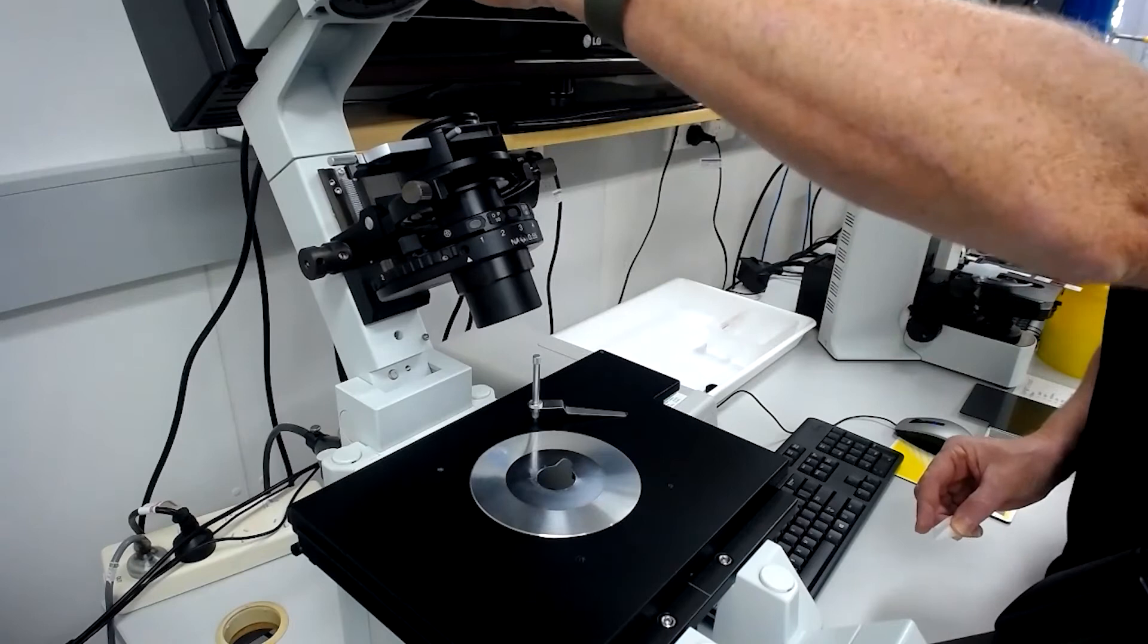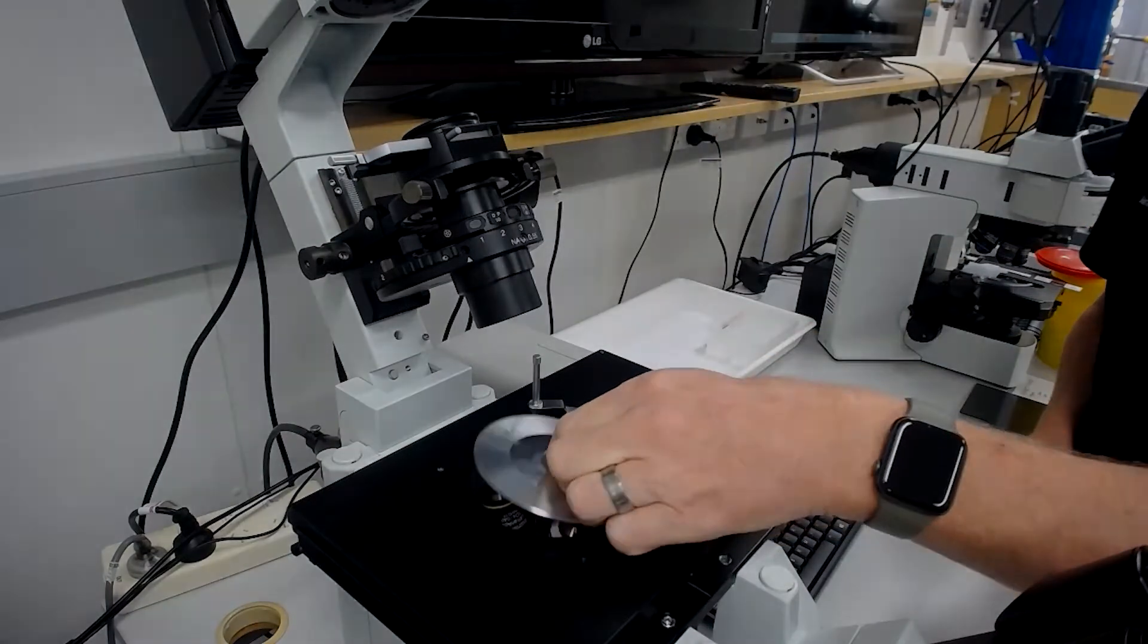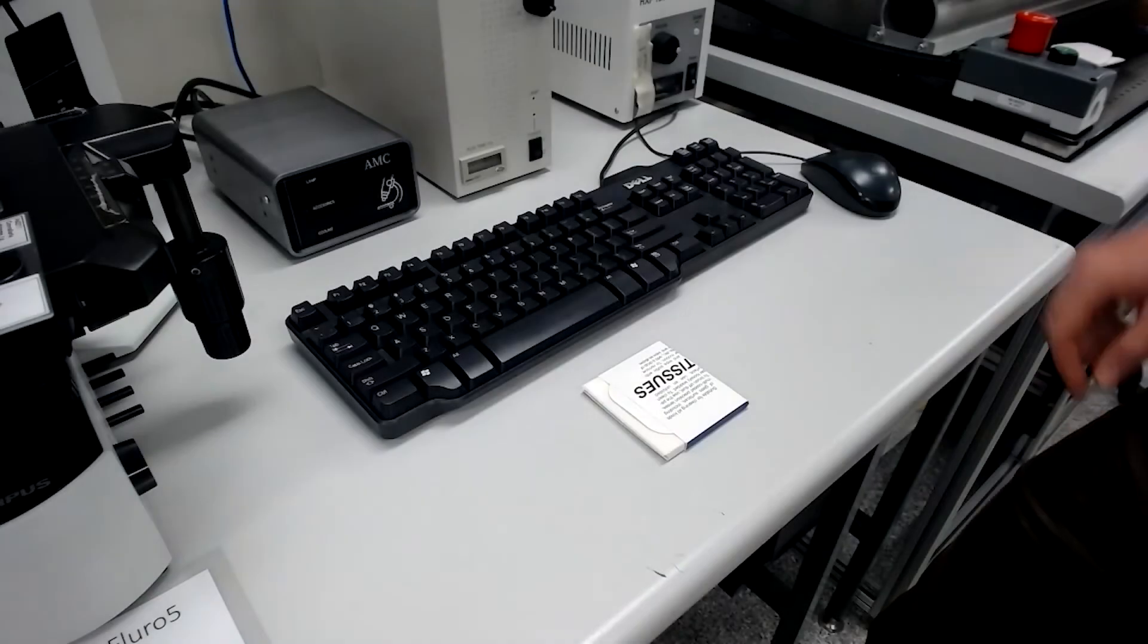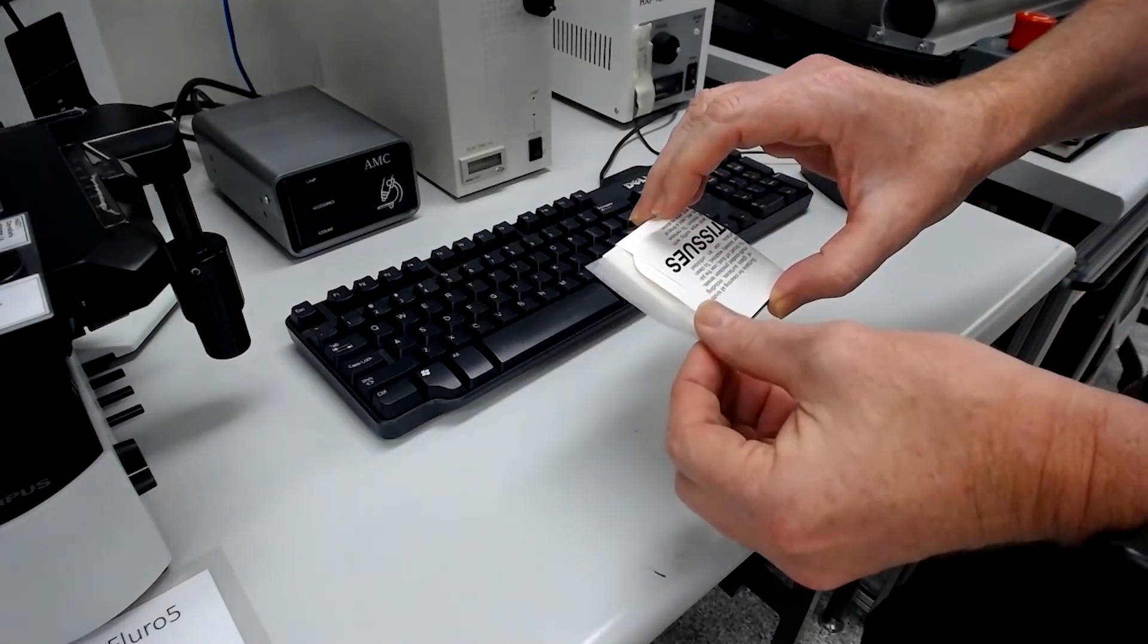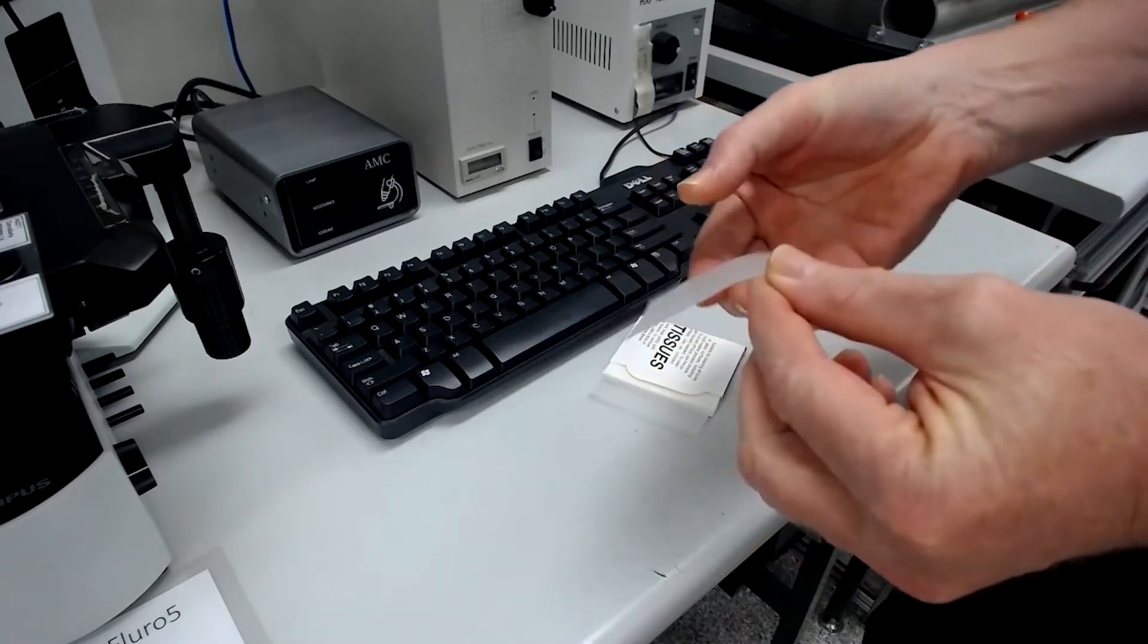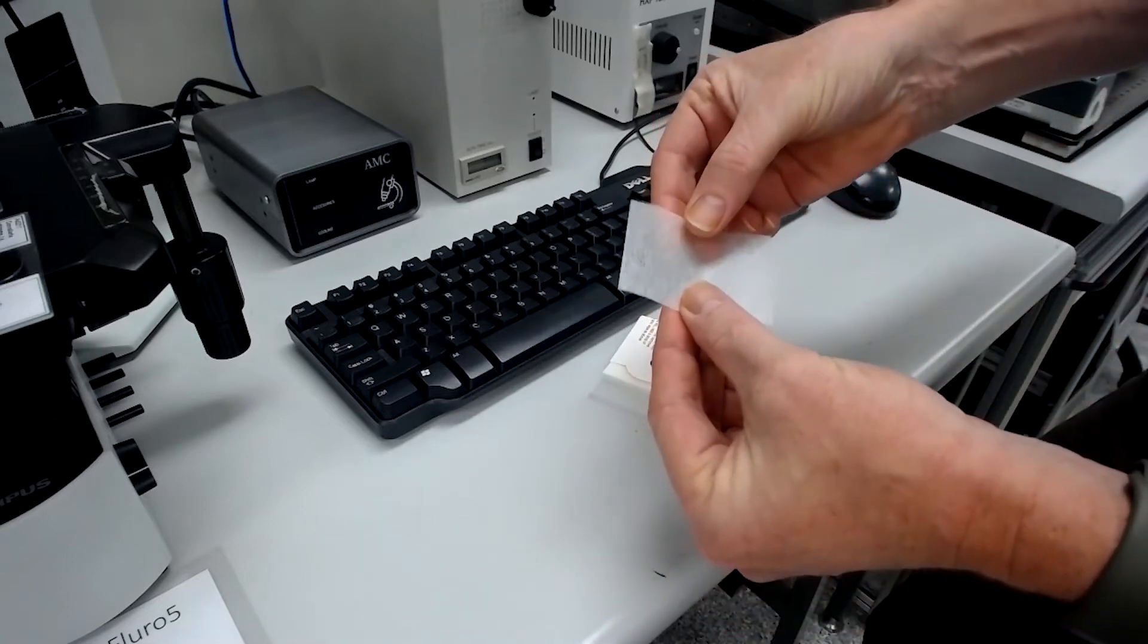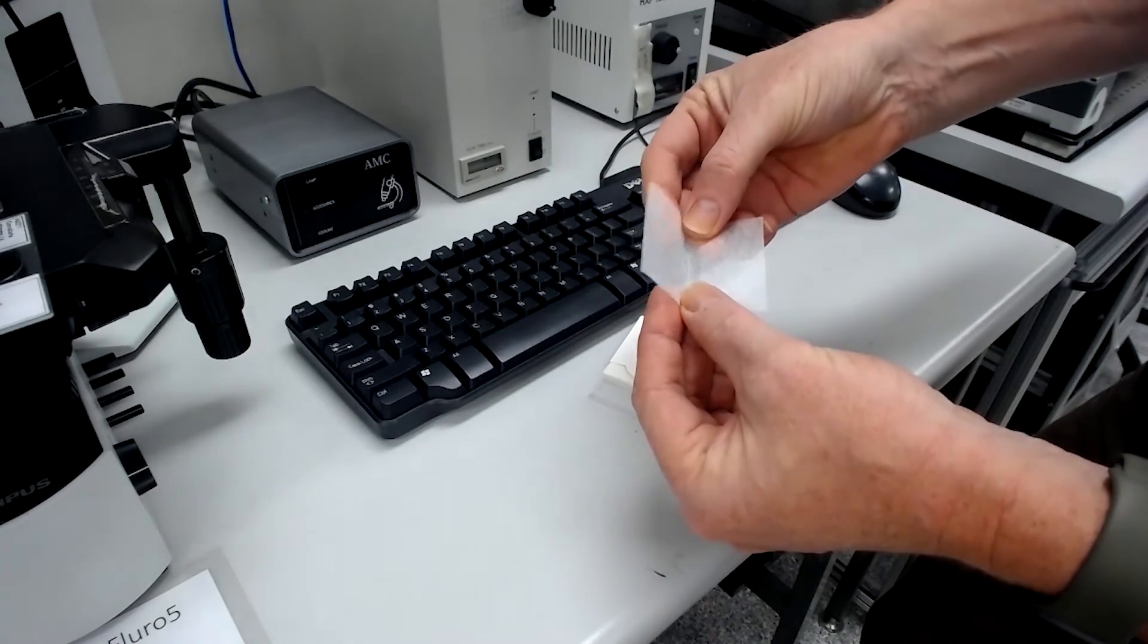To prepare for imaging, clean all the objectives. Take a piece of lens tissue from the box and only touch the tissue along the edge, being careful to not transfer oils from your finger onto parts of the tissue that will be used to clean the objective.